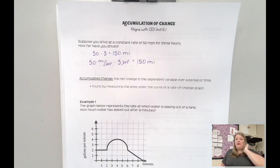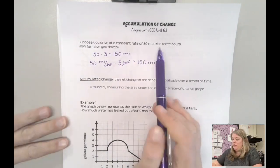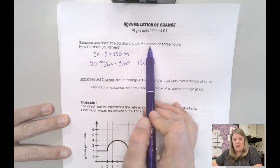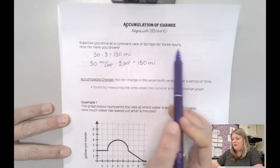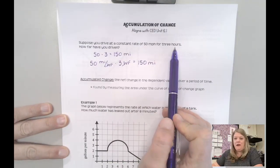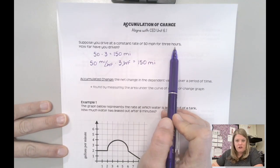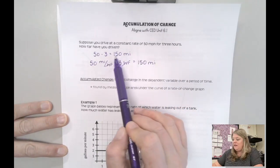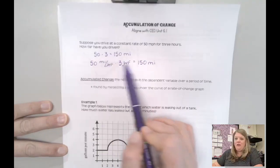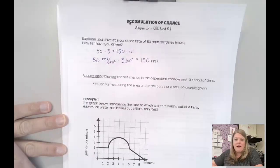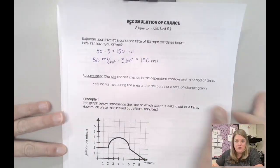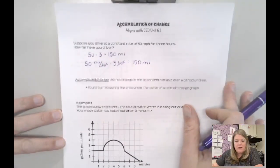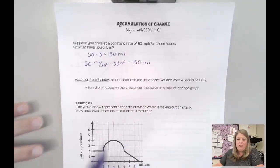That's an accumulation of change. This is a rate of change, this is how long we're allowing that rate of change to occur, and then this is how many miles we will have racked up at the end of those three hours. So that's what we mean by accumulation.